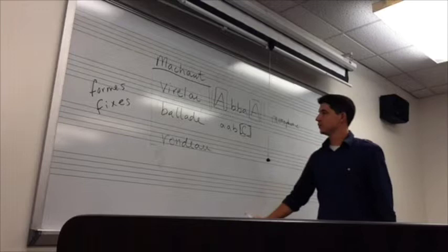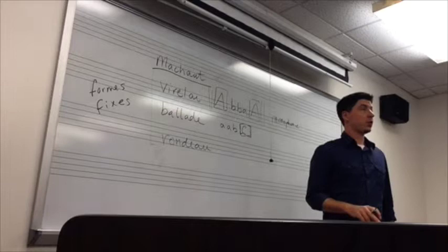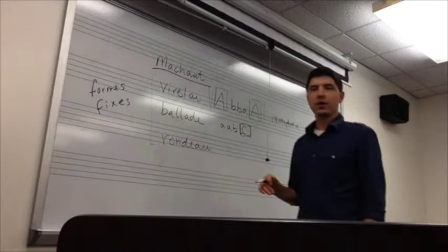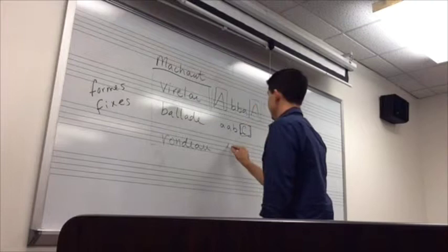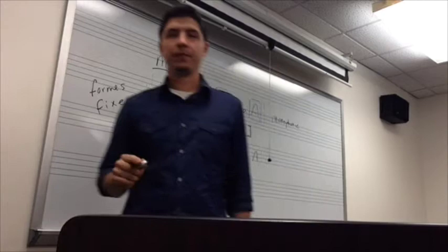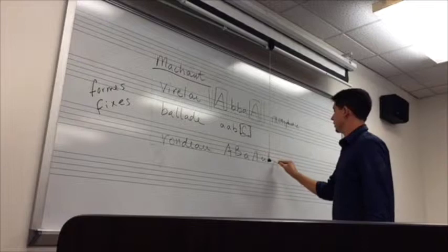The rondeau is the most complex of these forms. The rondeau goes like this: A B lowercase-a uppercase-A lowercase-a lowercase-b uppercase-A uppercase-B.